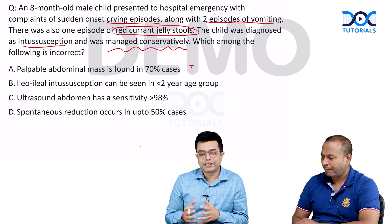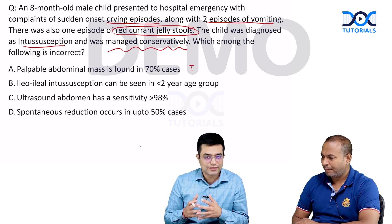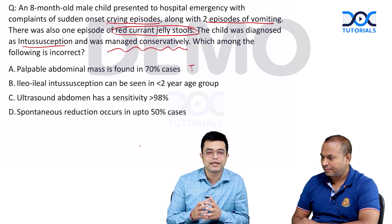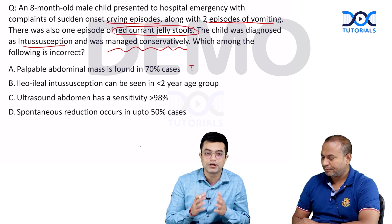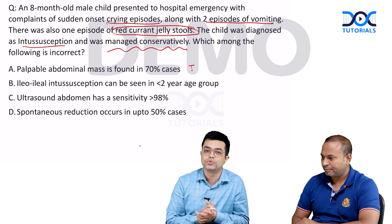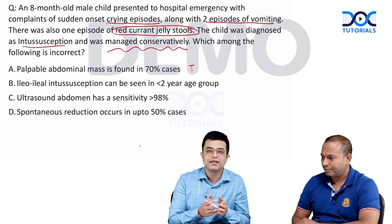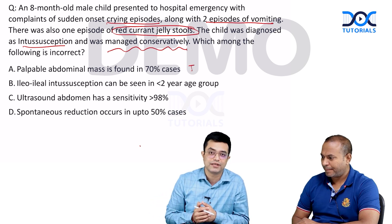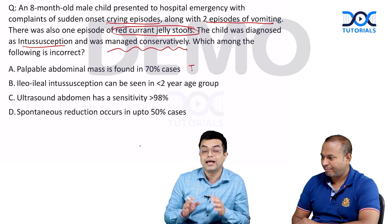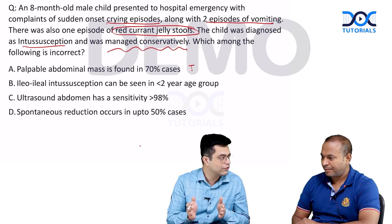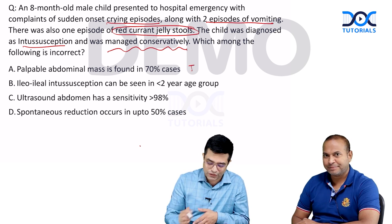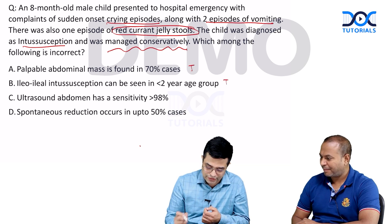Option B: intussusception is majorly of the ileocolic variety. However, ileo-ileal variety can also be seen in certain children, particularly those below two years of age — the younger the child, the higher the prevalence of ileo-ileal intussusception. Having said that, the overall most common variety remains ileocolic. So option B is also partially correct.